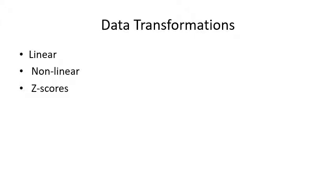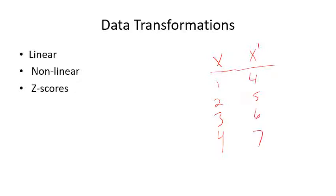When we're talking about data transformations, what we basically mean is when we are transforming scores from one set of scores to another set of scores. So let's say you've got X scores of 1, 2, 3, and 4. You can do different types of transformations — we can do linear, nonlinear, and z-score — but basically we're transforming all the numbers from one score into another score.